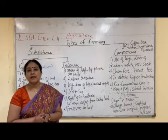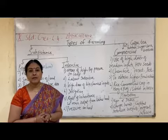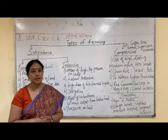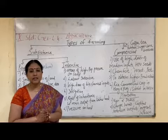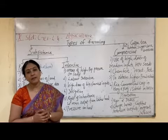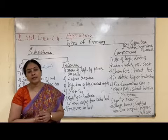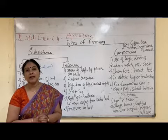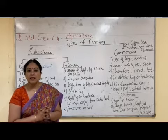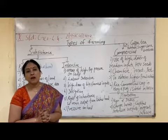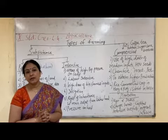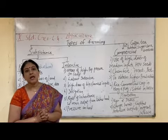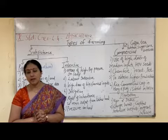Now let us see how many types of farming are prevalent in India. Farming can be divided into two basic categories: subsistence farming and commercial farming. Subsistence farming can again be divided into two categories — primitive subsistence and intensive subsistence farming.